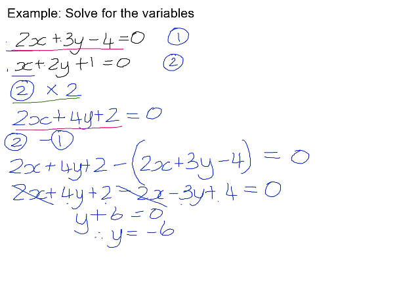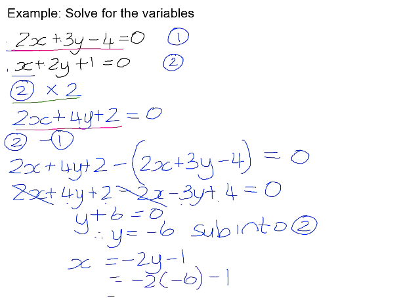We now need to take that y value and substitute it back into one of our original equations. It doesn't matter which equation you choose to substitute it back into. I'm going to go into equation 2, the original equation 2, so that will give us x is equal to negative 2y minus 1, which will be negative 2 times negative 6 minus 1. Negative 2 times negative 6 is positive 12. Positive 12 subtract 1 is 11. So we have now solved for both x and y by using an elimination method.